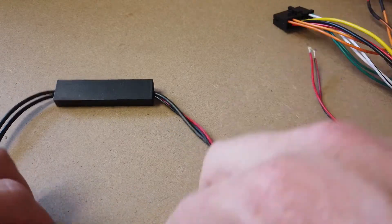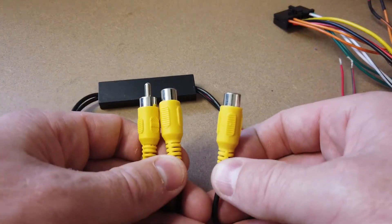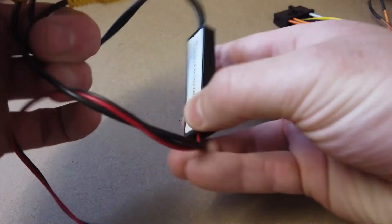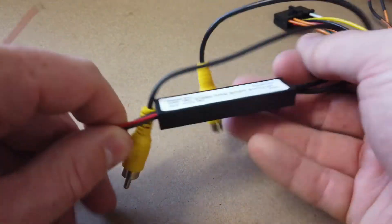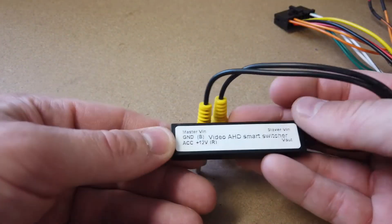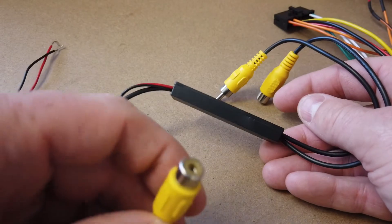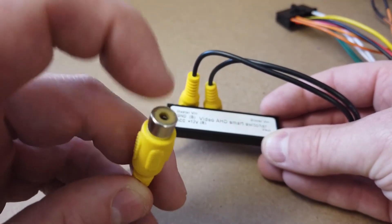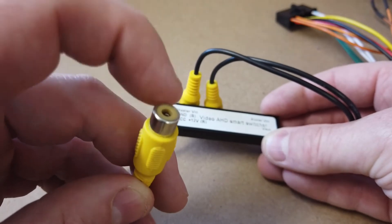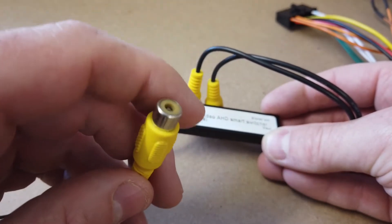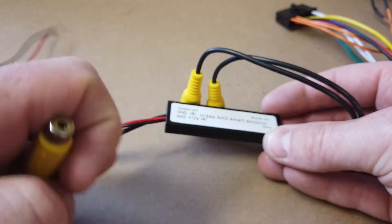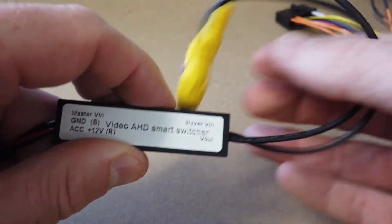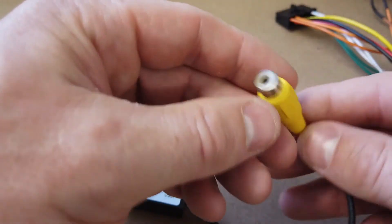You've got three RCA cables coming out. You can see you've got master video in on this side here, which is this one. You want to connect this to your trailer or caravan camera - if this is plugged in, this one will win and show.